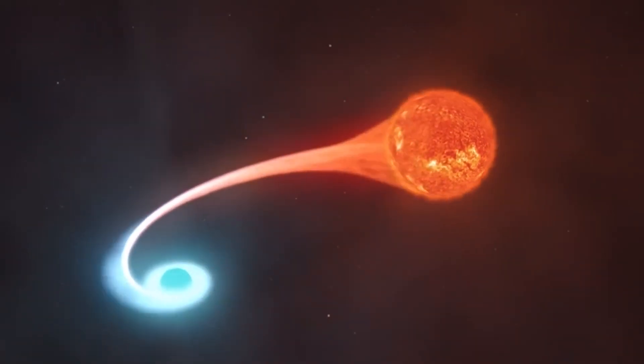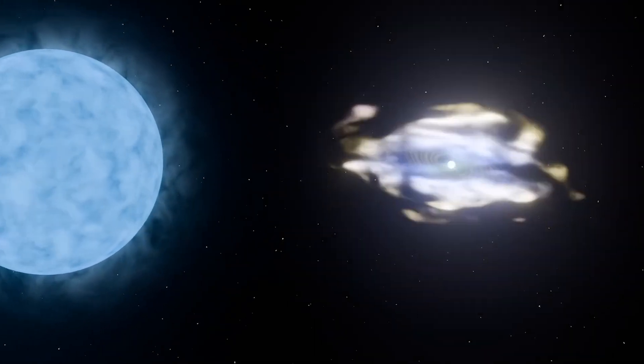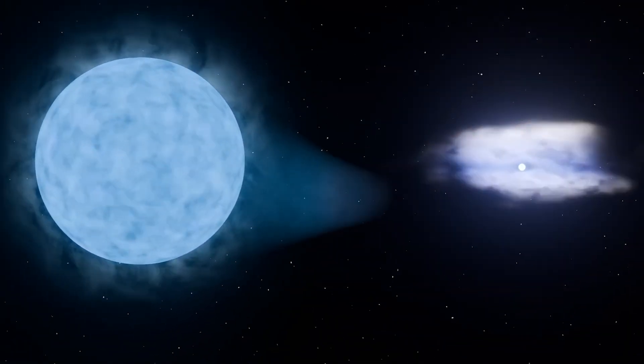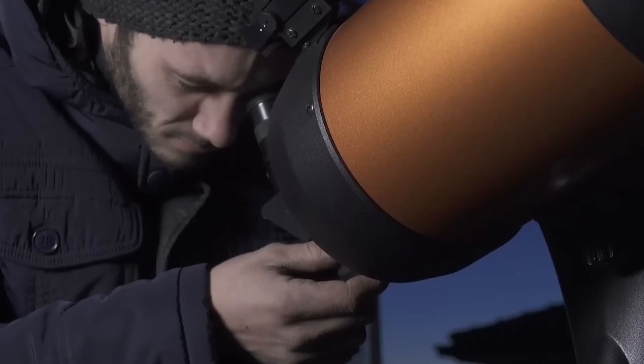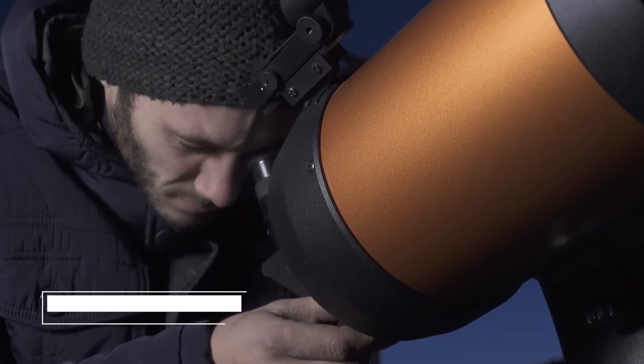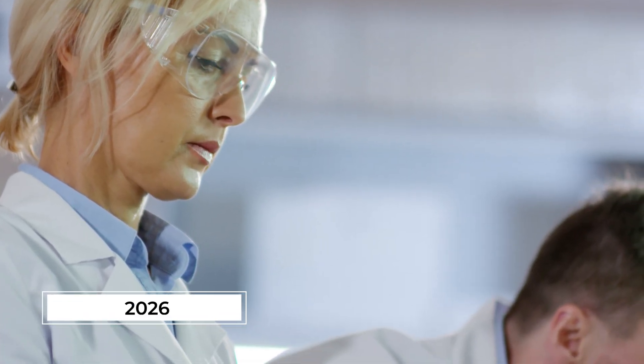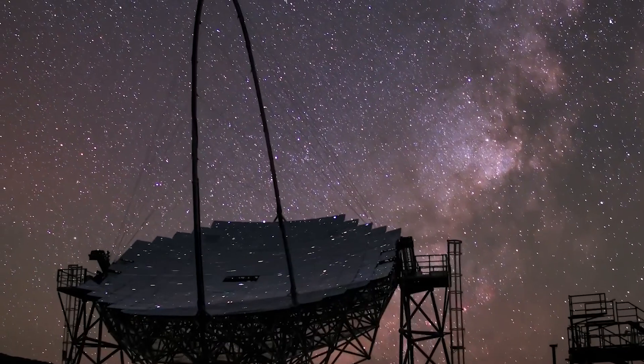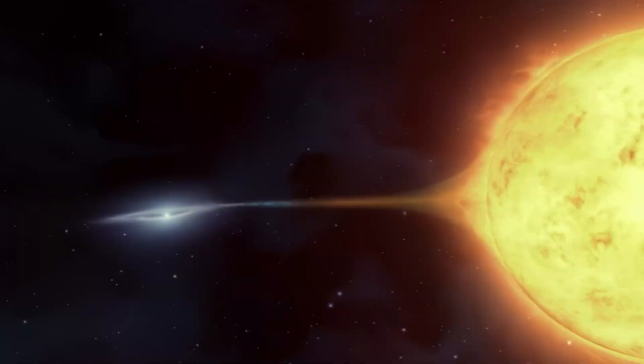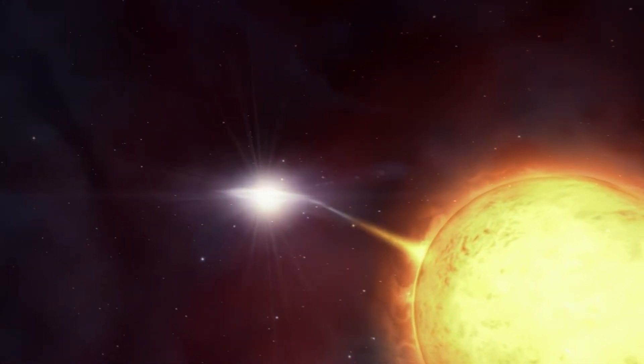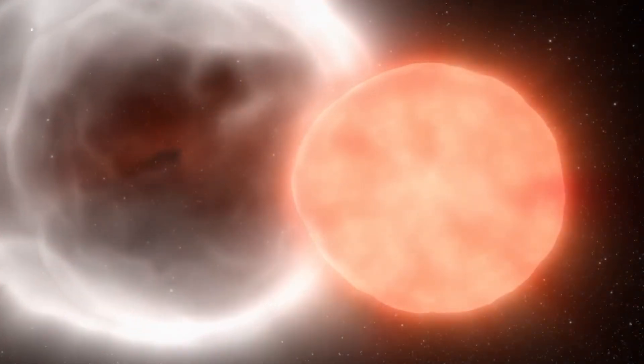T Corona Borealis can even be seen with the naked eye. And here's what's most intriguing. No one knows exactly when it will flare up. It could happen today, tomorrow, or in a few months. Some scientists believe the burst will occur between spring and autumn of 2025, while others think it might not happen until 2026, or even later. All we have are indirect signs and analogies with events almost a century ago. But one thing is clear. The flare is inevitable. And we are literally on the brink of one of the rarest phenomena accessible to the casual observer.